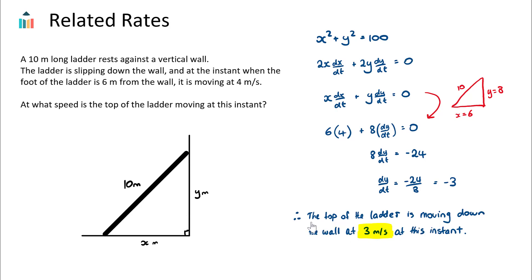To conclude — which is always the final step — the top of the ladder is moving down the wall at 3 meters per second at this instant, and this is our dy/dt. To summarize the steps: draw a nice clear diagram; find a relationship between your variables, which will be your related rates; use implicit differentiation to reach an equation; substitute in the known values at the given instant; and solve for the unknown. Once you practice a few of these questions, you'll find it's a very interesting topic that appears in about 50% of IB exams.